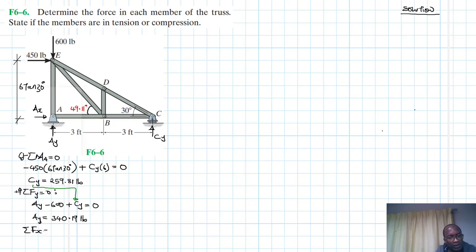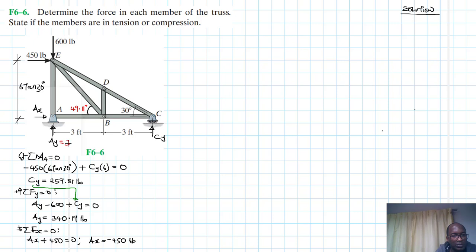Summation of forces in the X direction equal to zero: we have Ax plus 450 equal to zero, therefore Ax equals minus 450 pounds. So our reaction summary is: Ay = 340.19 pounds, Cy = 259.81 pounds, and Ax = 450 pounds (acting in the negative x direction).